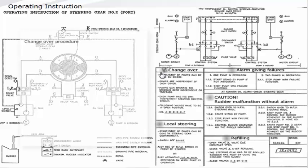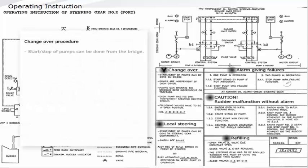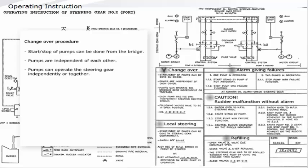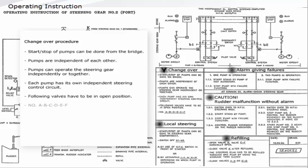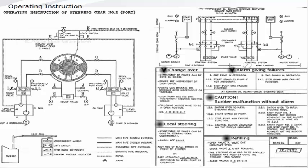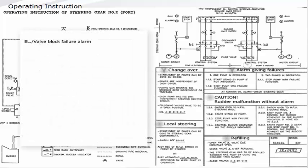Change over procedure: Start or stop of pumps can be done from the bridge. Pumps are independent of each other and can operate the steering gear independently or together. Each pump has its own independent steering control circuit. Following valves have to be in open position: A, B, C, D, E and F.